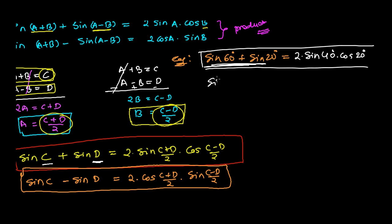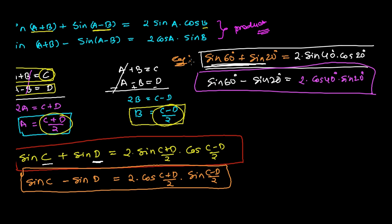Now if it's a difference — sine 60° minus sine 20° — then we use the second formula: 2·cosine((c plus d)/2)·sine((c minus d)/2). So it becomes 2·cosine((60 plus 20)/2)·sine((60 minus 20)/2), which is 2·cosine(40°)·sine(20°). This is how we convert the sum or difference form of the sine expression into the product form.